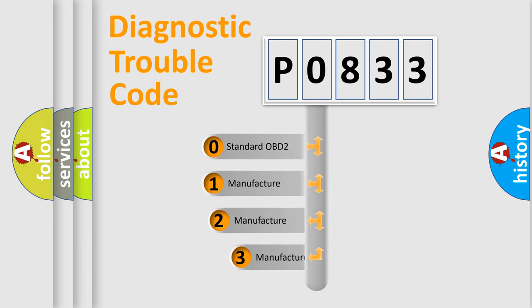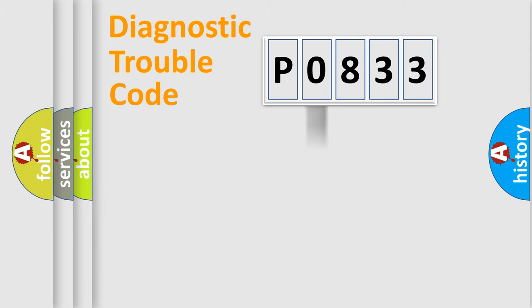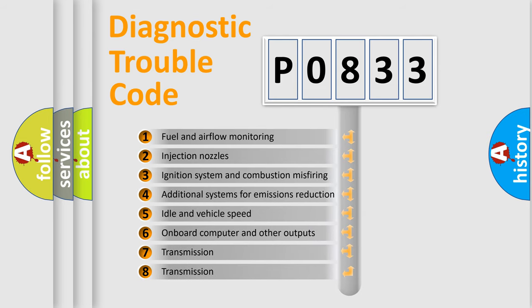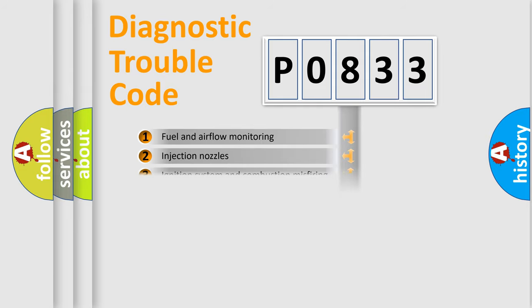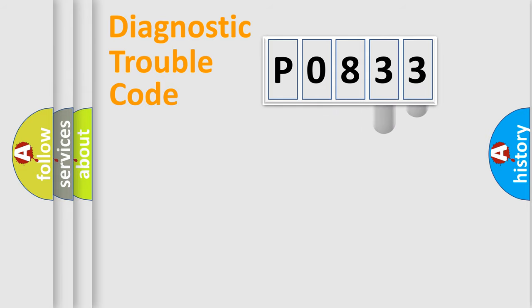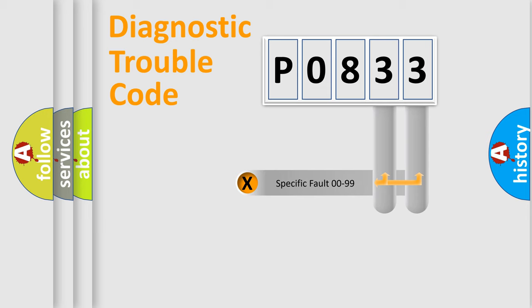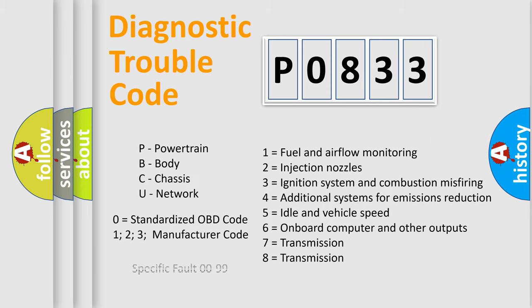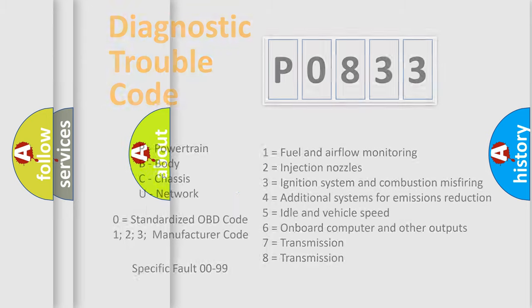If the second character is expressed as zero, it is a standardized error. In the case of numbers 1, 2, or 3, it is a more specific expression of a car-specific error. The third character specifies a subset of errors. This division is valid only for the standardized DTC code, where only the last two characters define the specific fault of the group. Such a division is valid only if the second character code is expressed by the number zero.